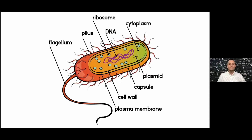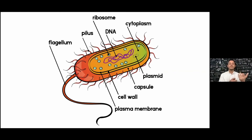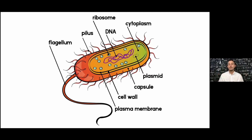Then if you look, we've got the cytoplasm — that's the fluid that everything is floating within and contained in inside our prokaryote. And we've got the flagellum. That is really important because the flagellum is what helps this bacteria move around and travel. That tail is going to propel it and really help it on its journey.